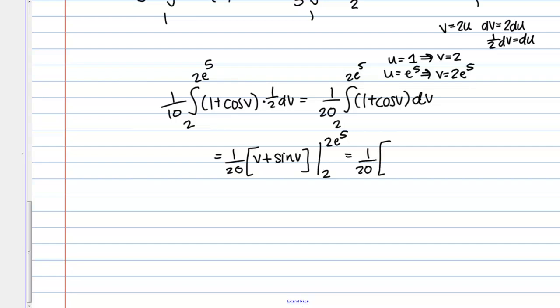So 1 over 20 out front, and then inside, let's see, I've got 2e to the 5 plus sine of 2e to the 5 minus the quantity 2 plus sine 2. And you could maybe simplify that just a tiny bit or find a decimal approximation, but this is our final answer for this problem.